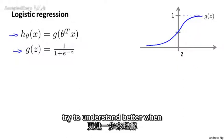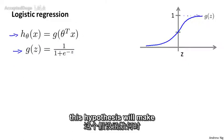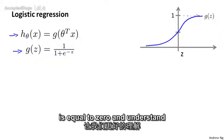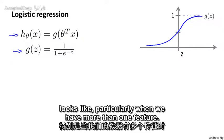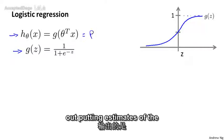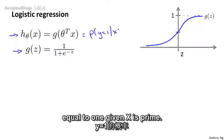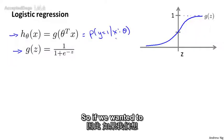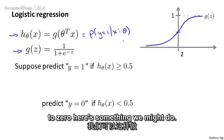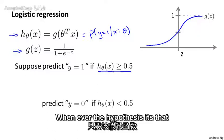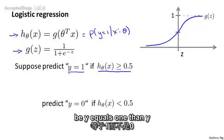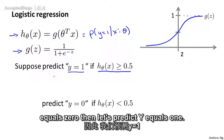What I want to do now is try to understand better when this hypothesis will make predictions that y is equal to 1 versus when it might make predictions that y is equal to 0, and understand better what the hypothesis function looks like, particularly when we have more than one feature. Concretely, this hypothesis is outputting estimates of the probability that y is equal to 1, given x and parameterized by theta. So if we wanted to predict whether y equals 1 or y equals 0, whenever the hypothesis outputs that the probability of y being 1 is greater than or equal to 0.5, then let's predict y equals 1.